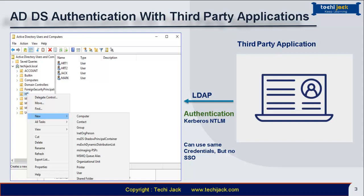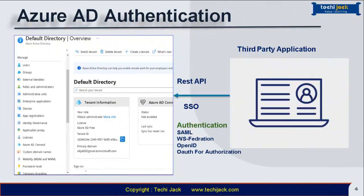Now let's see how it works with Azure. With Azure Active Directory authentication, if you have a third-party application and your directory system is Azure AD, the REST API is what integrates your third-party application with Azure Active Directory. And yes, you will get SSO — single sign-on — meaning when you are already signed in, you don't have to enter your credentials again and again. The authentication protocols used are SAML, WS-Federation, and OpenID, with OAuth used for authorization.